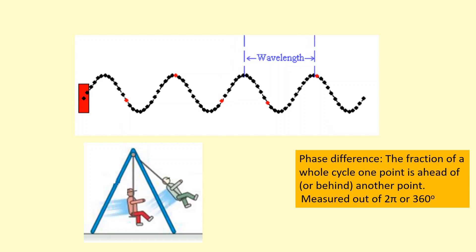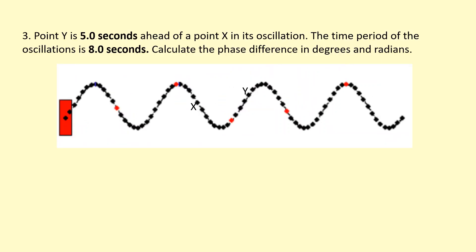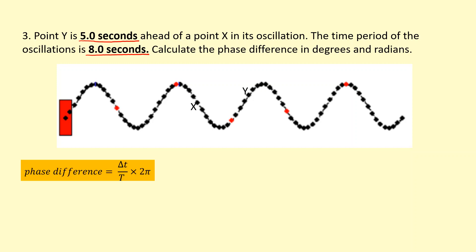Phase difference is measured out of 2 pi. In this question, point Y is 5 seconds ahead of point X on its oscillation, and the time period of oscillation is 8 seconds. Calculate the phase difference in degrees and radians. A whole cycle is 8 seconds — the time period — and we're 5 seconds ahead, so we're 5 eighths of a cycle ahead. We take the time difference, which is 5, divided by the time period of 8 seconds, then multiply by 2 pi to get it in radians, and we get 3.93 radians. You can also multiply by 360 to get it in degrees.